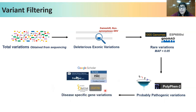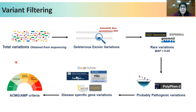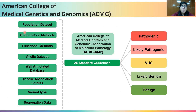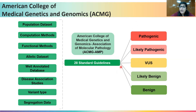Then one can look only at variations in genes specific to the disease. These disease-specific genes can be found using OMIM and searching the literature databases. Finally, we can assign the interpretation criteria of ACMG and AMP to arrive at a result. Instead of using a number of different methods, ACMG-AMP criteria integrates all of them into a set of 28 standard guidelines that can interpret the variant as pathogenic, likely pathogenic, VUS, likely benign, or benign.